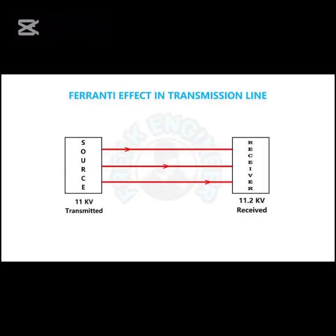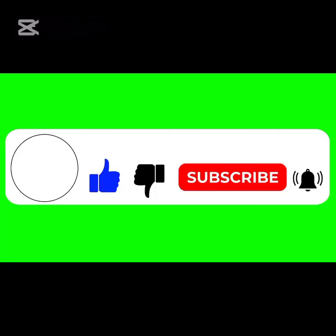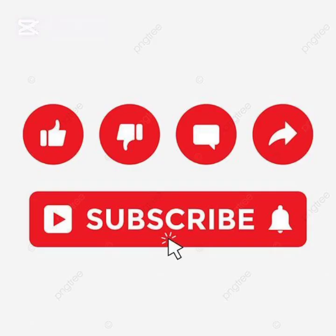Key points to note about the Ferranti effect: one, it causes a rise in voltage resulting in a negative voltage difference between the sending and receiving ends; two, the effect is directly proportional to the square of both frequency and line length; three, increasing transmission line length and supply frequency amplify the Ferranti effect; four, short transmission lines and high voltage DC transmission lines are not susceptible; five, the effect is most significant under no load or light load conditions; and lastly, the Ferranti effect occurs when the capacitor charging current exceeds the load current. Thanks for watching — please like, subscribe, and share your thoughts in the comments. Stay safe!